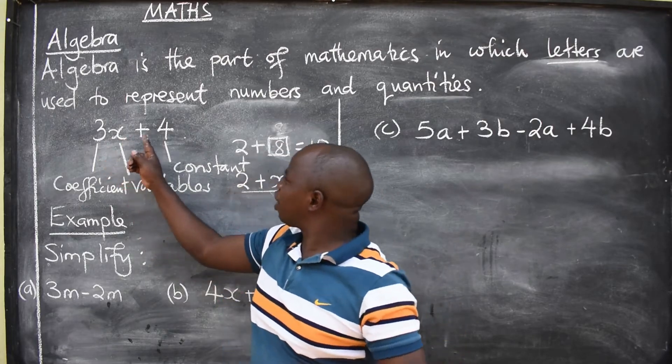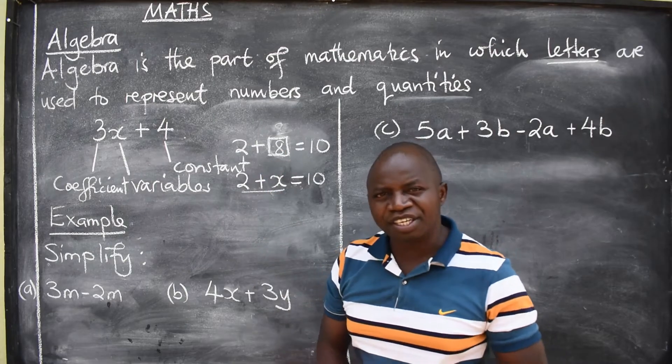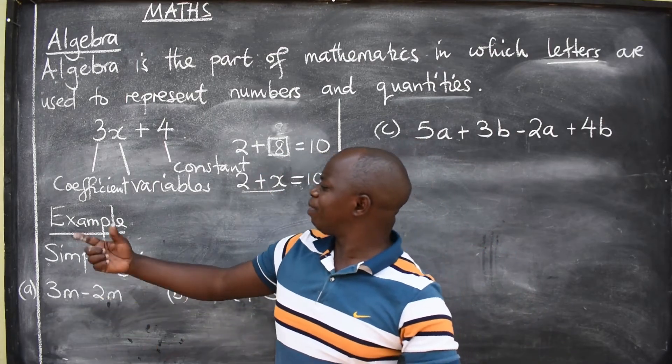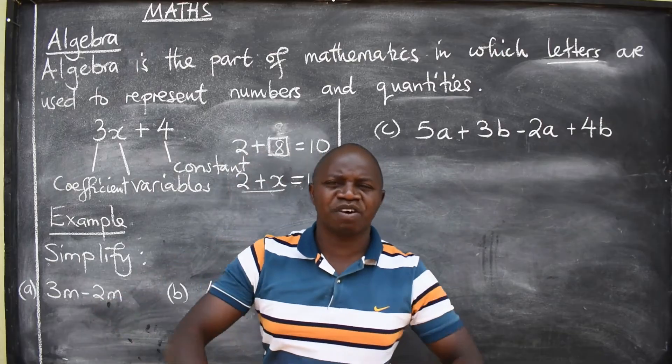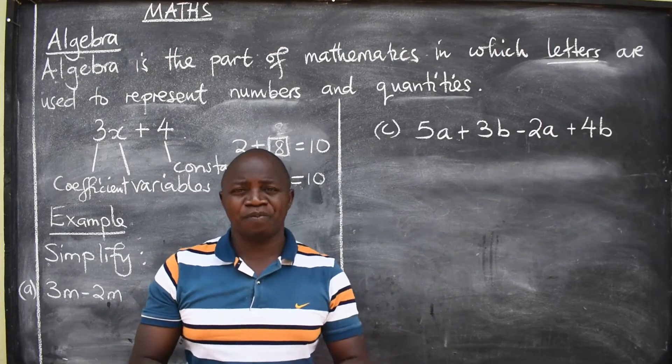So in expressions, they will only be able to ask you to simplify, to factorize, to express in a single fraction such terms. Hope we are together. So we have this example here, which says simplify. Part A, 3M minus 2M. What is the answer?